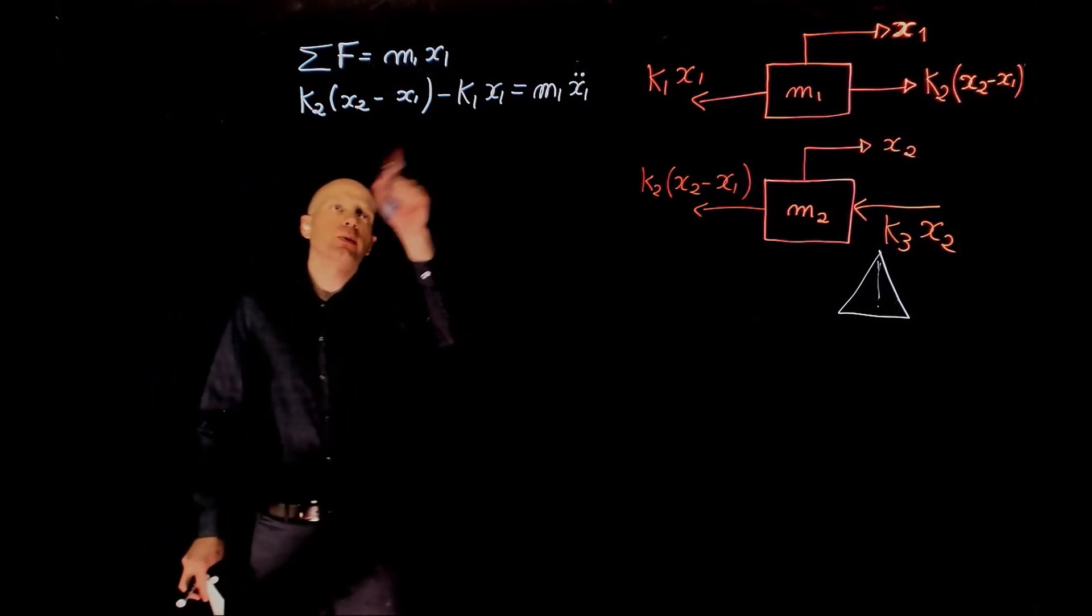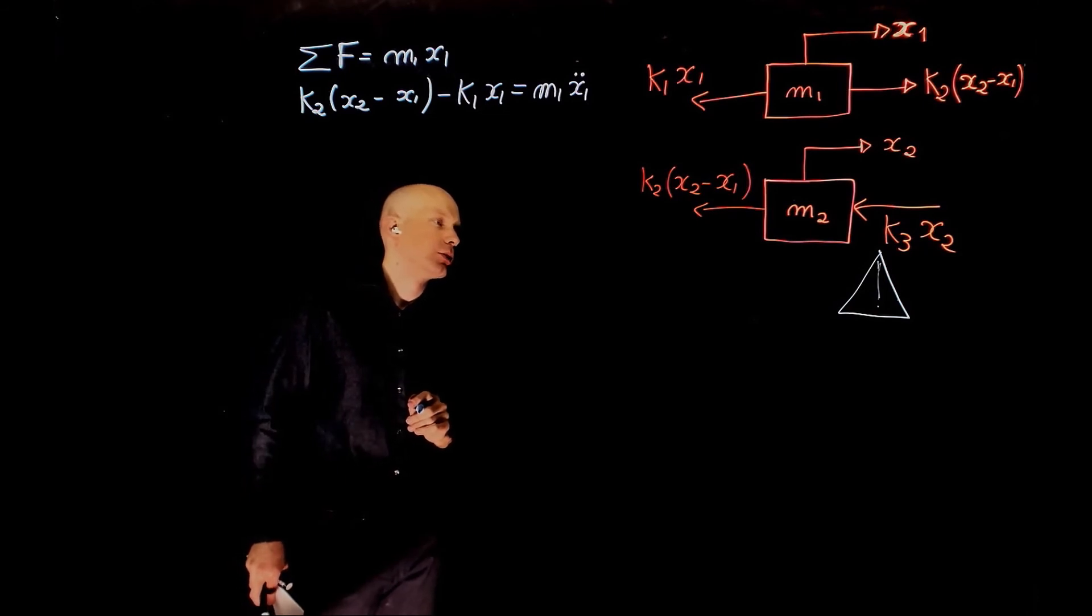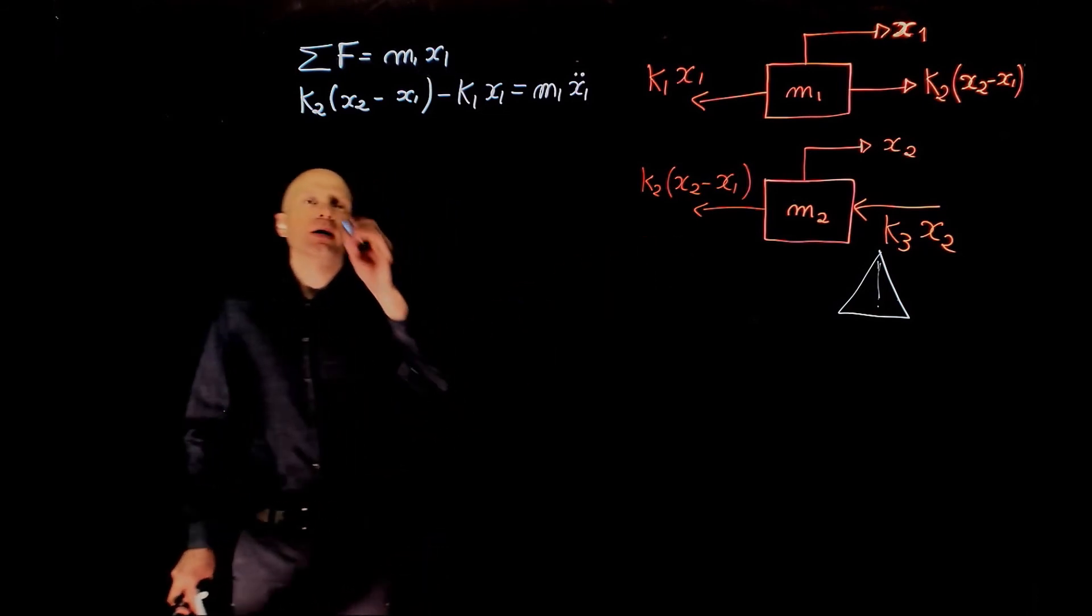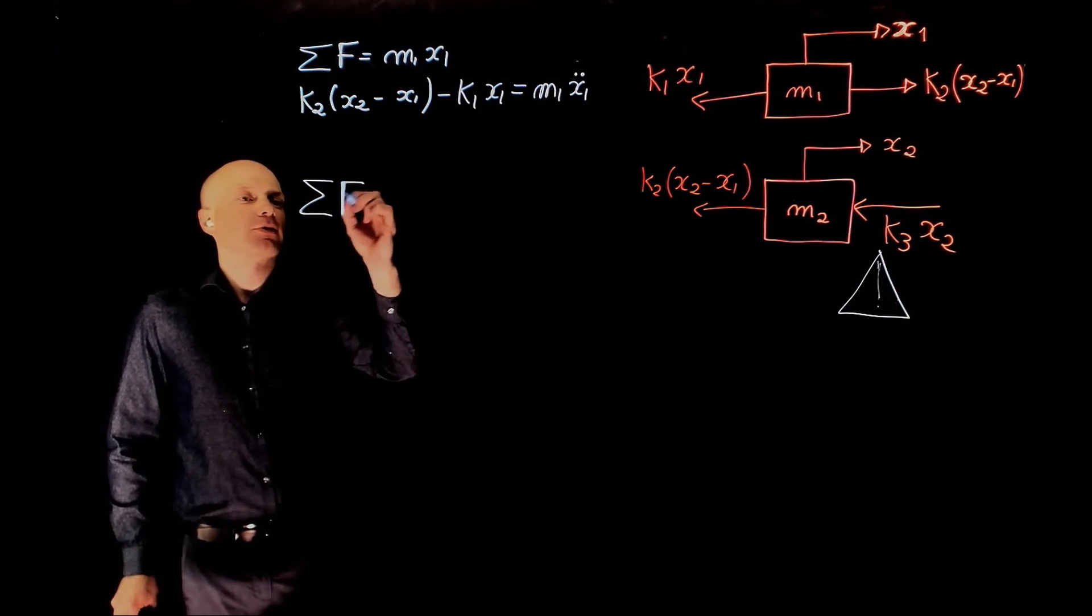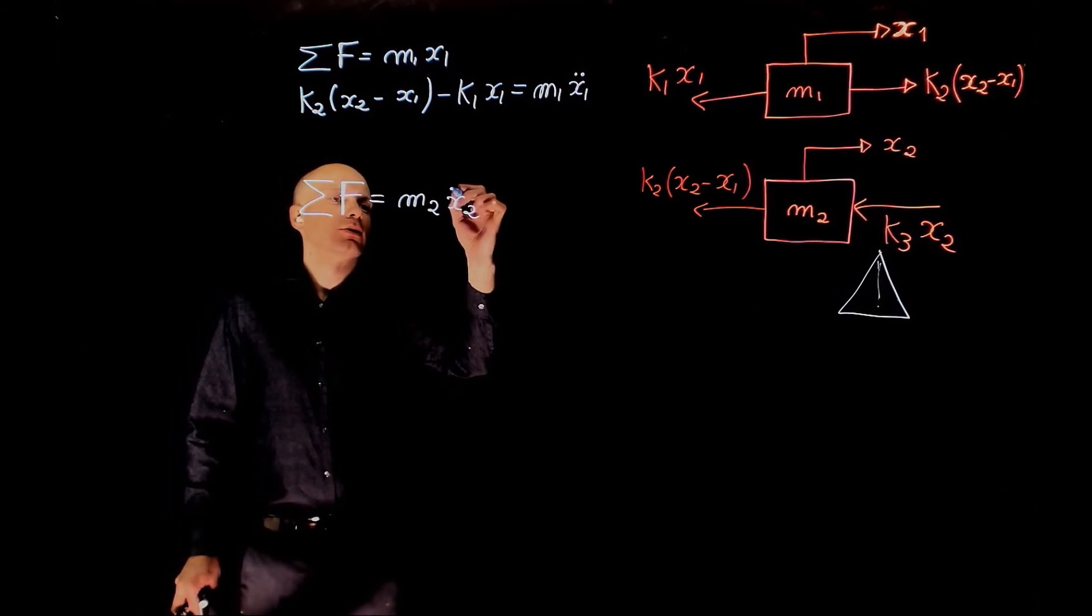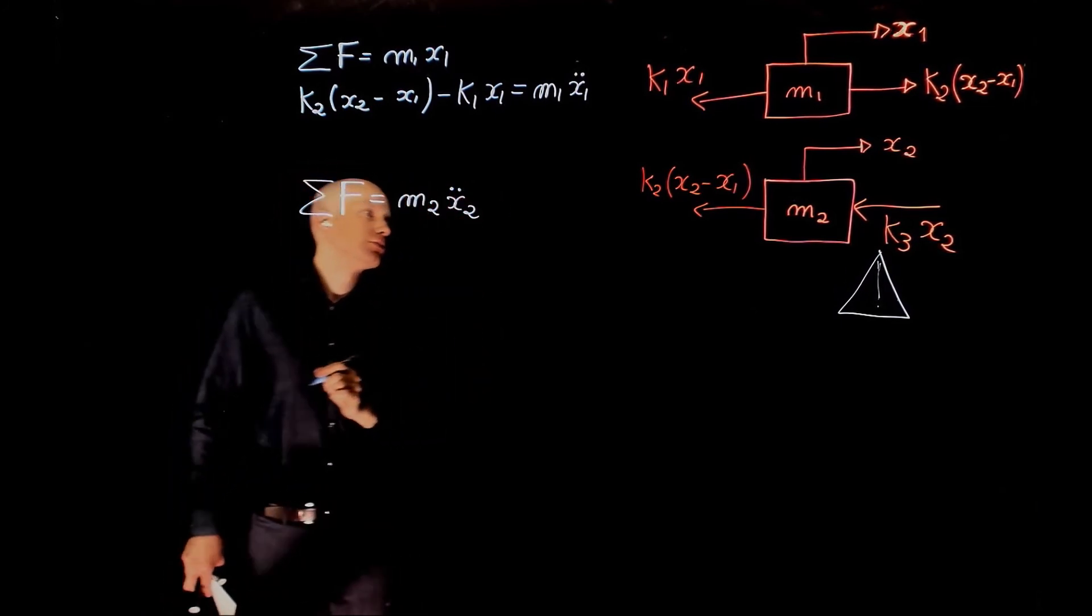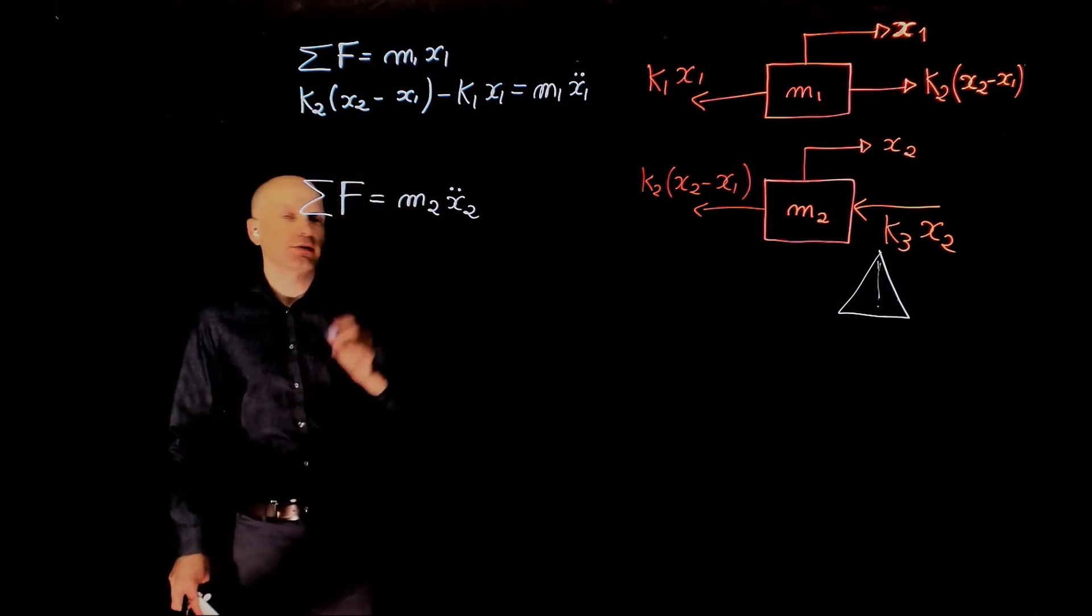We can rearrange this equation, we can simply leave it like that. And for mass 2, we have sum of forces equals to m2 x2 double dot.